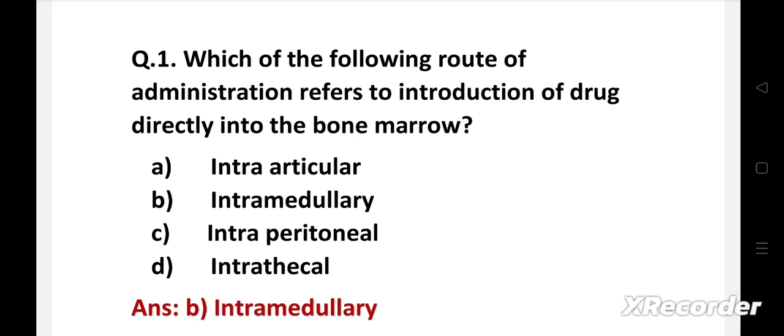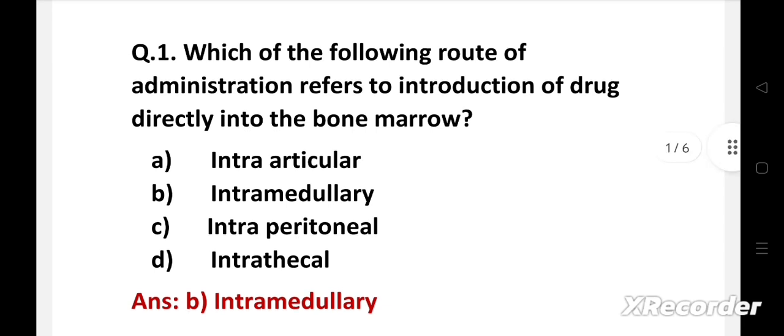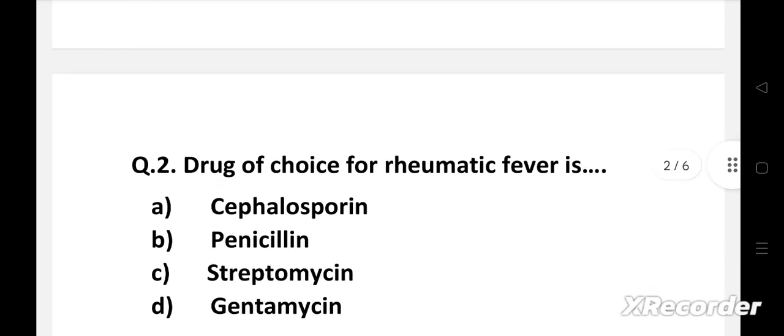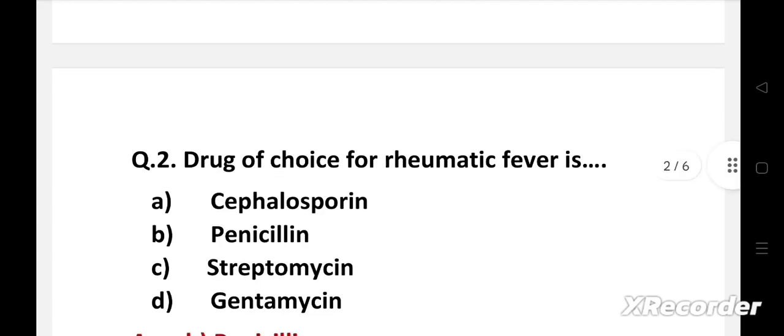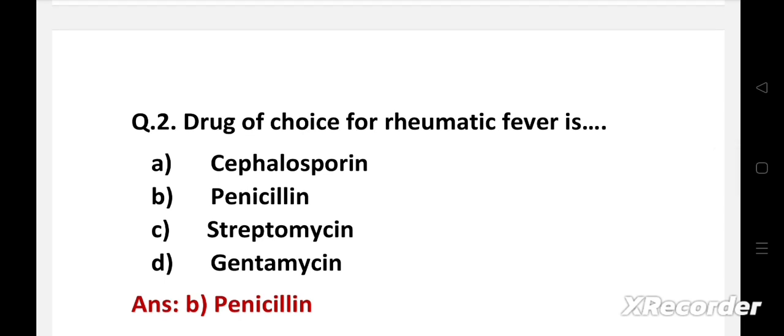Next question: drug of choice for rheumatic fever is option A: cephalosporin, B: penicillin, C: streptomycin, D: gentamicin. Right answer is option B, penicillin. Rheumatic fever is an immunologically mediated inflammatory disorder which occurs as a sequel to group A streptococcal pharyngeal infection.